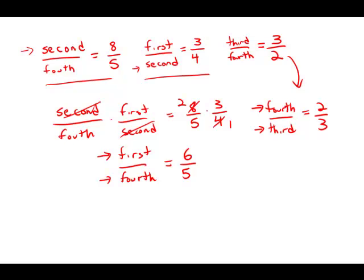So I'm now going to multiply these, first over fourth times fourth over third, and this is 6 over 5 times 2 over 3.